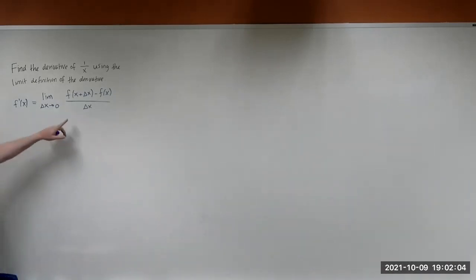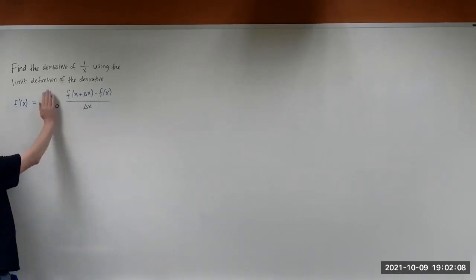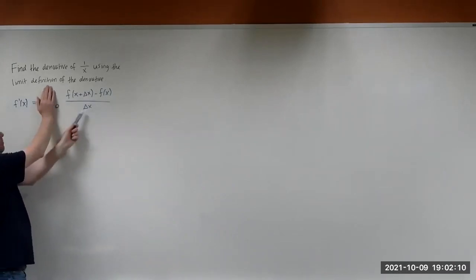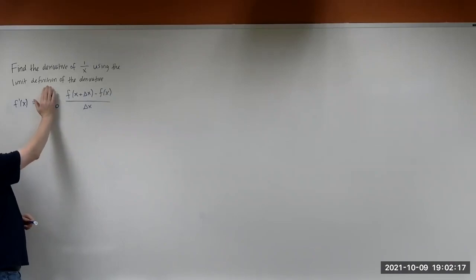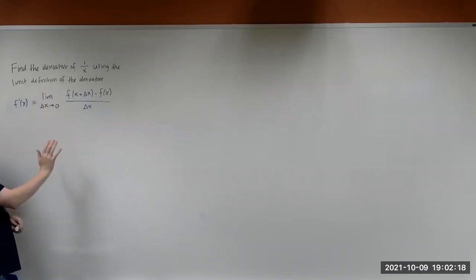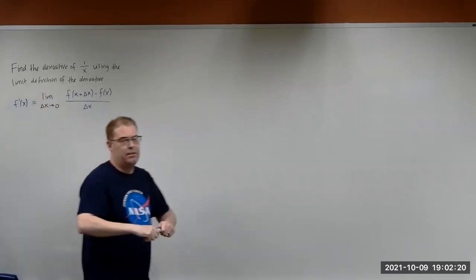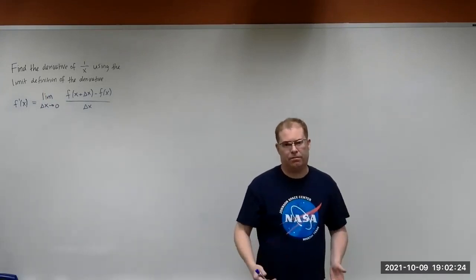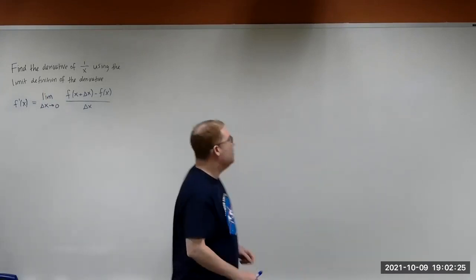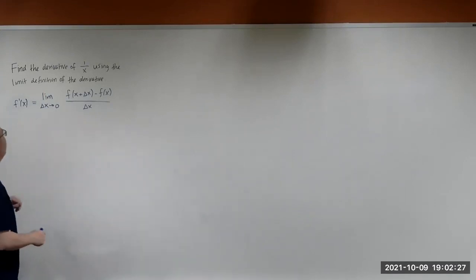This is actually coming from the slope of the secant line. And then when you take the limit, that secant line starts to approach the tangent line, and so you end up getting the derivative expression for the function. Anyway, we want to apply that to what we're trying to find here.